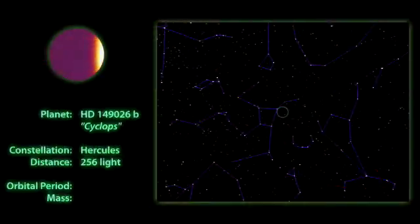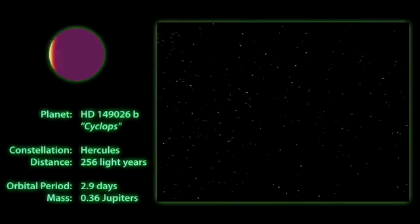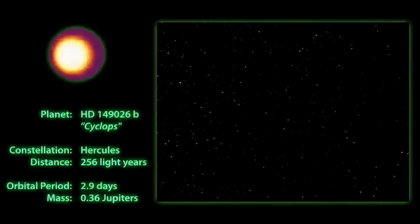Our first X-Planet, Cyclops, can be found in the constellation Hercules, orbiting a sun-like star that's about 250 light-years away.